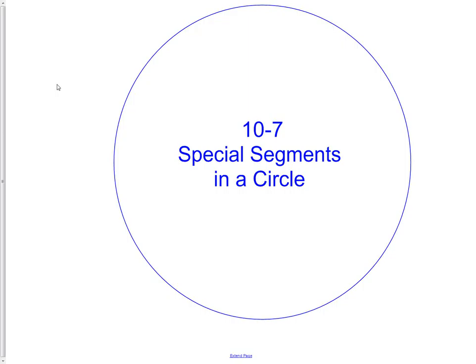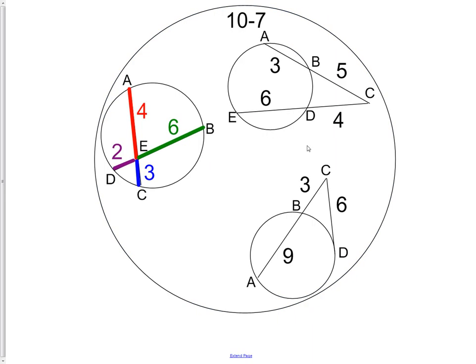We're now going to move on to special segments in a circle. When we're talking about special segments, it's not so much that they're created specially, but that they have special properties in a circle. You're going to notice that these look really similar to what we've just been studying in the last couple of sections, but the difference here is now we're talking about the lengths of the segments and not the measurements of the angles. Previously we were talking about the angles. Now we're going to talk about segment length.